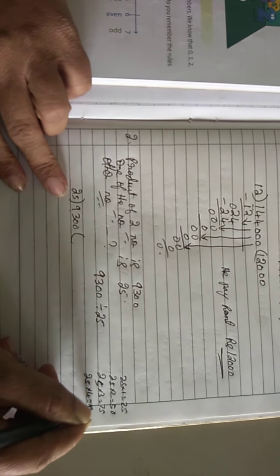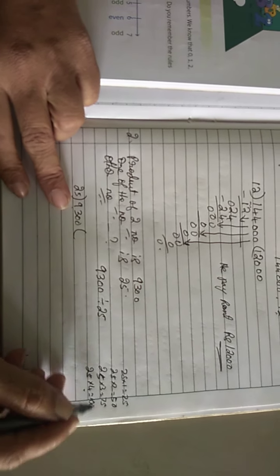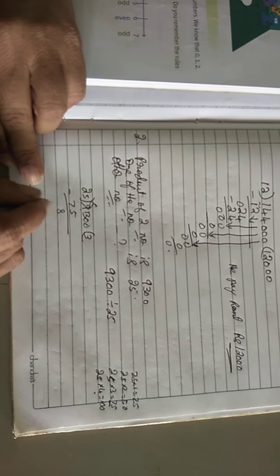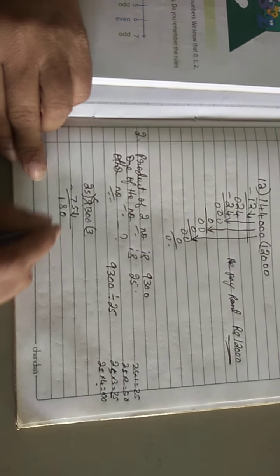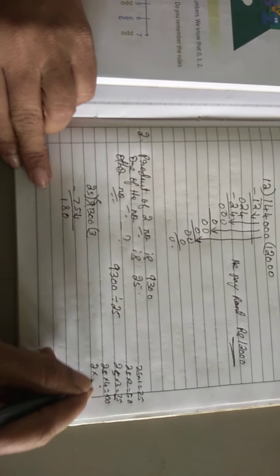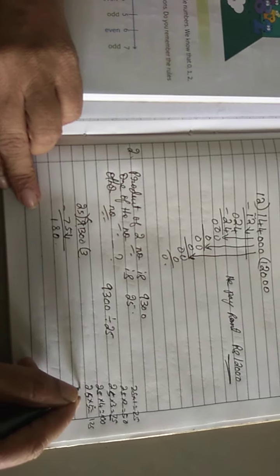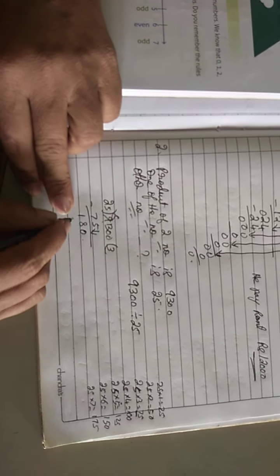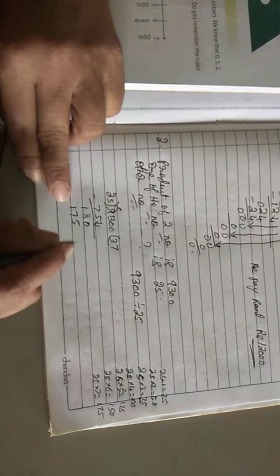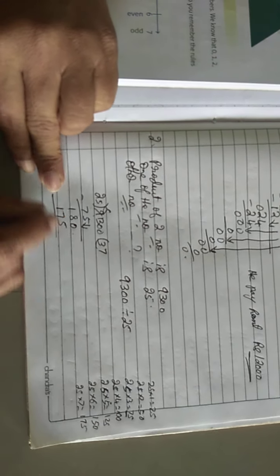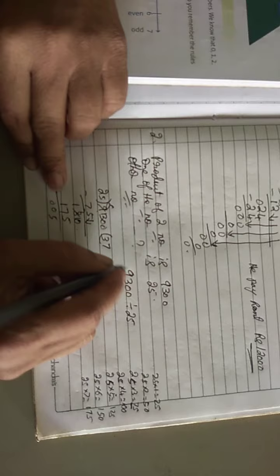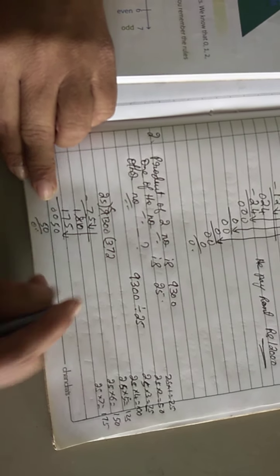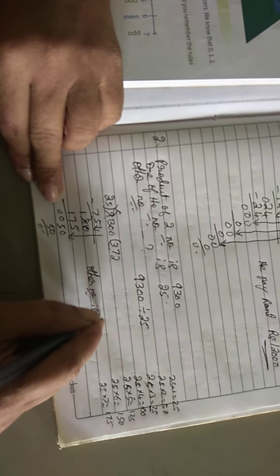25 3's are 75 — I will take 93, because 4's are 100, that is too big. So 3's are 75. 13 minus 5 is 8, 8 minus 7 is 1. Take another 0 down, divide by 25: 25 7's are 175. 10 minus 5 is 5. Now take another 0: 25 2's are 50, 0's are 0. So the other number is 372.